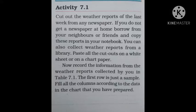You can also collect the weather report from a library. Paste all the cutouts on a white sheet or on a chart paper. Now record the information from the weather report collected by you in Table 7.1. The first row is just a sample — fill in the columns according to the data in the chart that you have prepared.